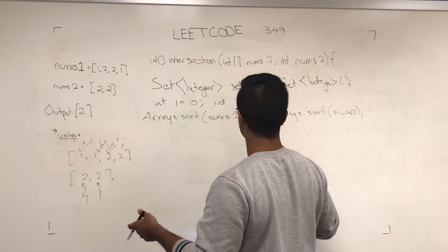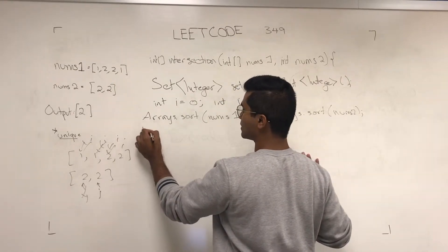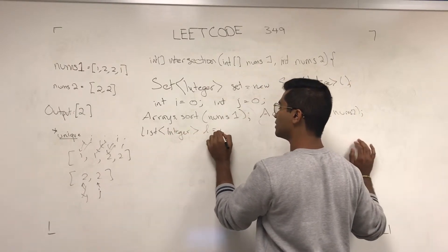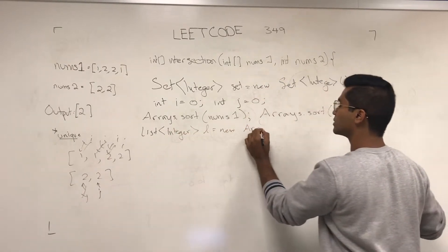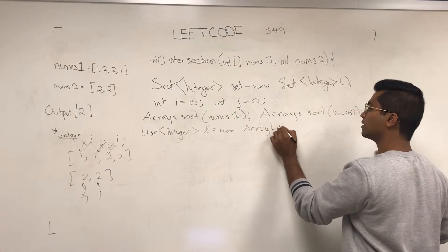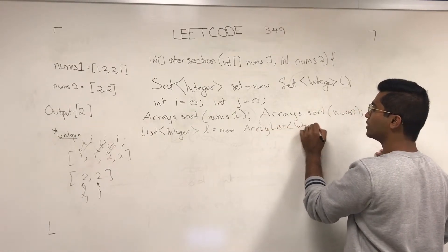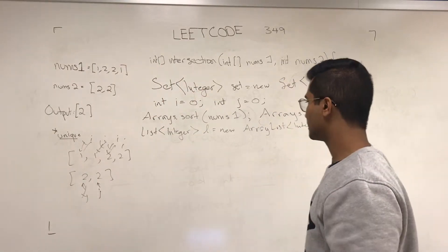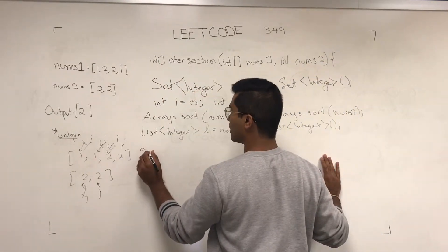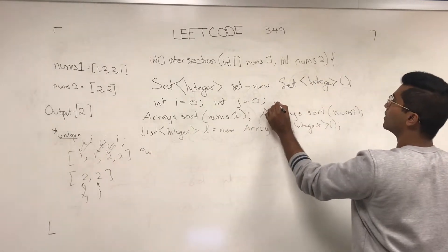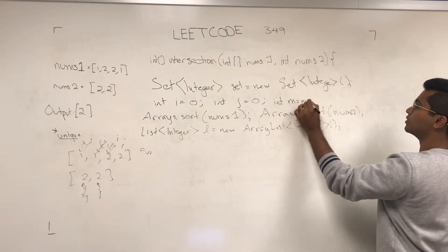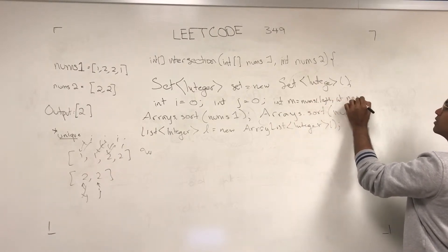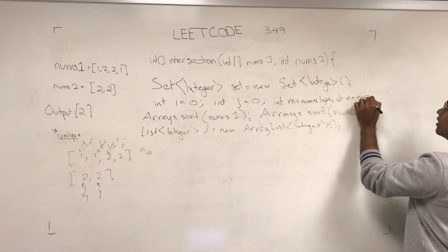Now let's keep a list of integers to hold integers that are common and unique. At the end, they want a return as an integer array. I'm going to write: int m equals nums1.length, int n equals nums2.length.